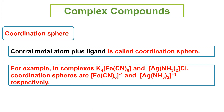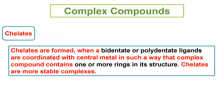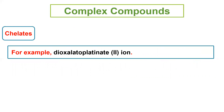Coordination sphere: central metal atom plus ligands together are called coordination sphere, written in large parentheses. Like in K4Fe(CN)6, the coordination sphere is [Fe(CN)6]4-. Chelates are formed when a bidentate or polydentate ligand is coordinated with a central metal atom in such a way that the complex contains one or more rings in its structure. Chelates are more stable complexes. Example: oxalato-platinum(II) complex with two oxalate ions is a chelate.